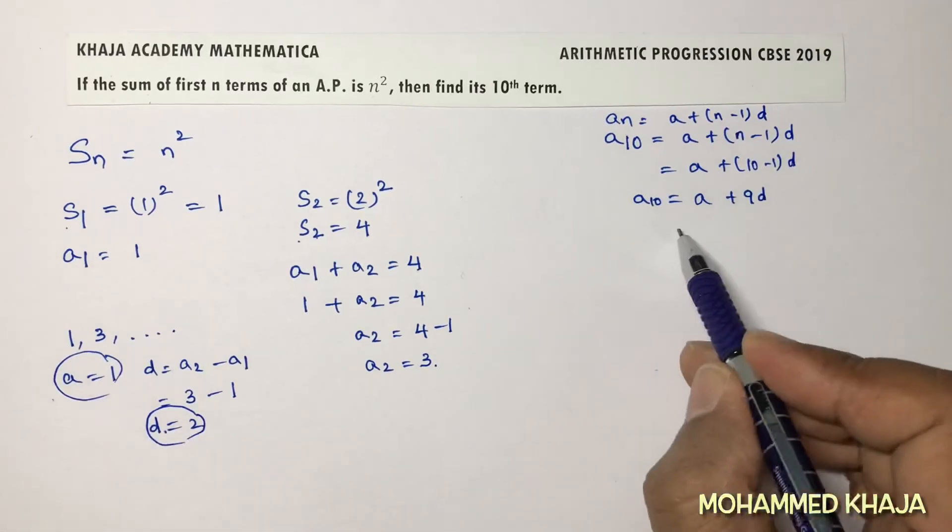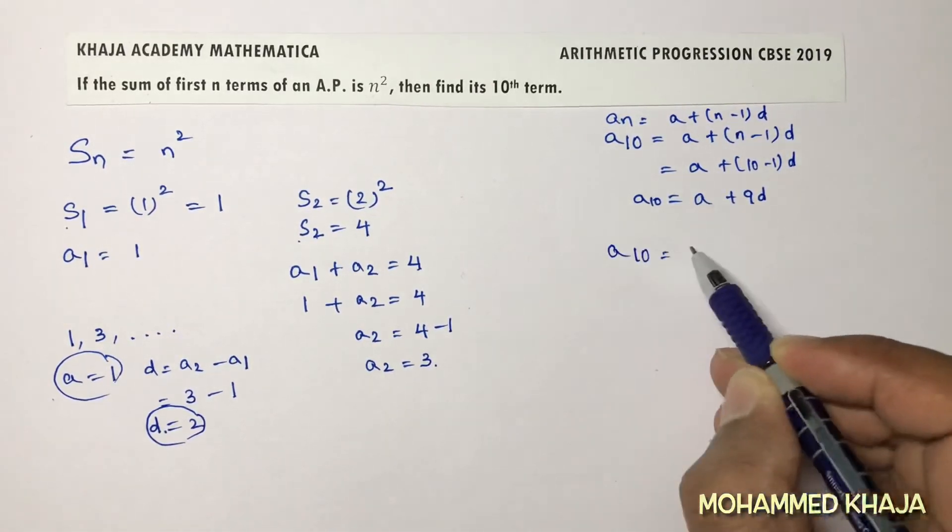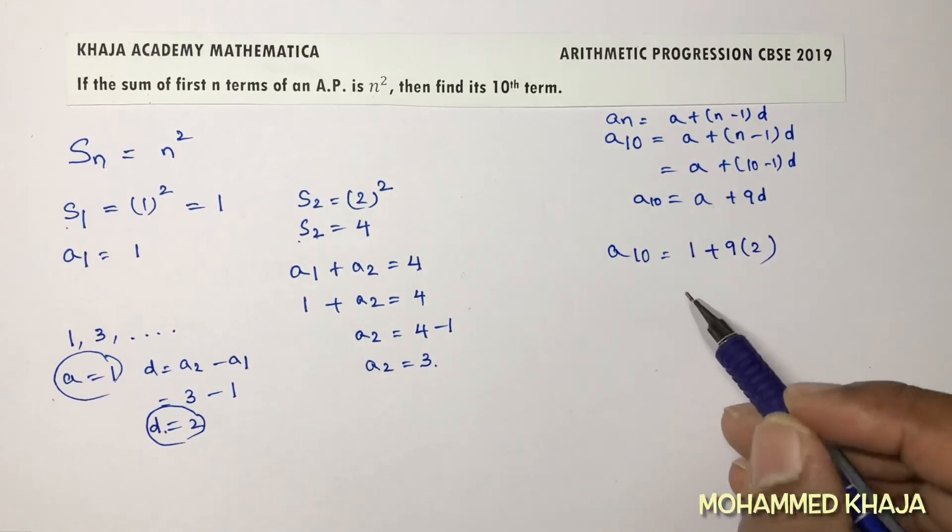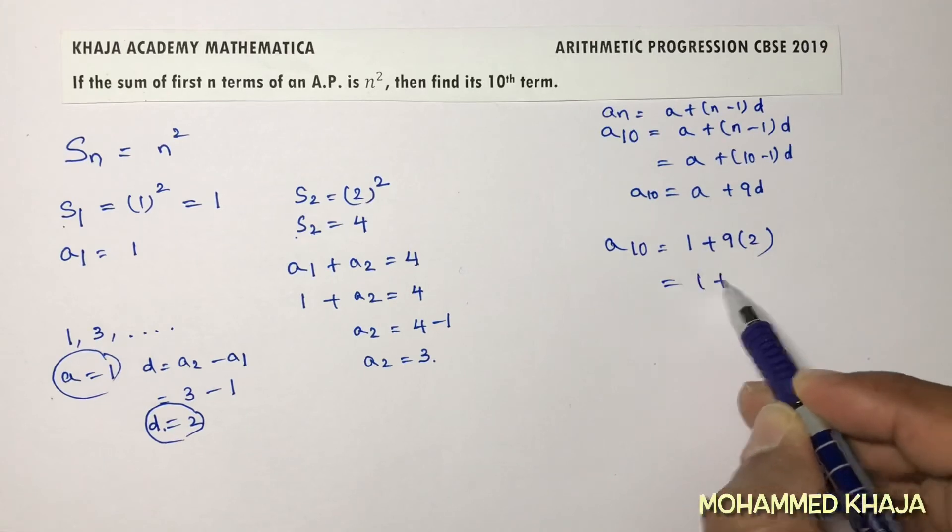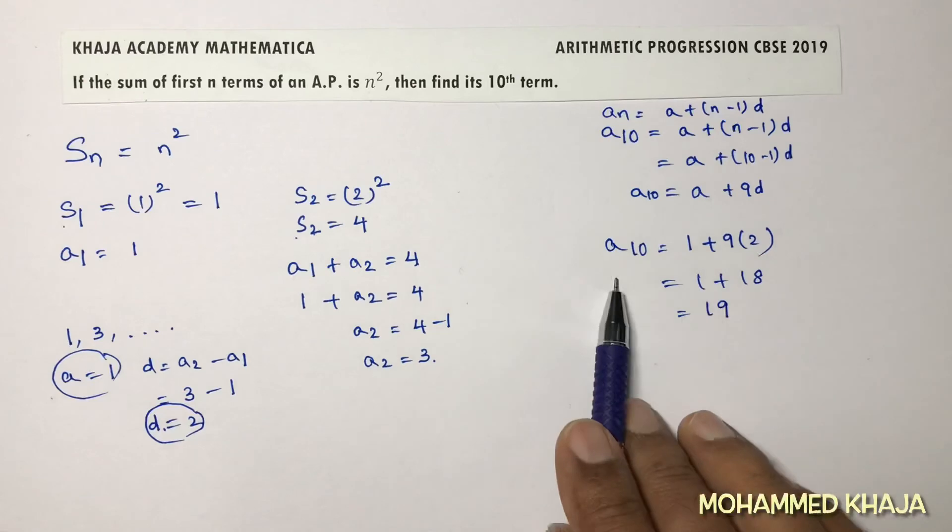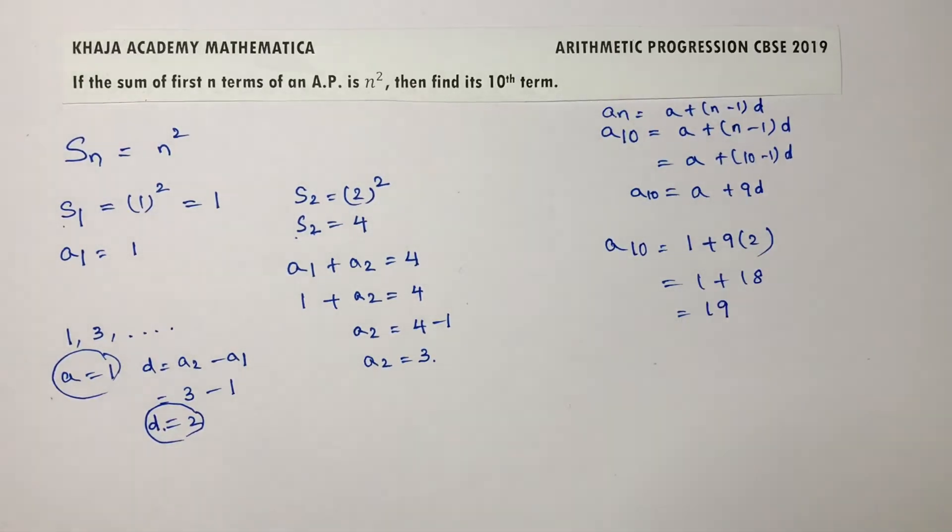Now you can find the tenth term. So a₁₀ equals a is 1 plus 9 into 2. 9 times 2 is 18. So 1 plus 18 is 19. So the tenth term is 19.